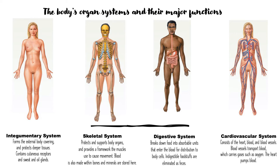The integumentary system forms the external body covering — hair, skin, and nails — everything on the outside of the body. It helps protect our deeper tissues and organs, contains cutaneous receptors related to the skin, and includes sweat and oil glands, which are also part of the integumentary system.